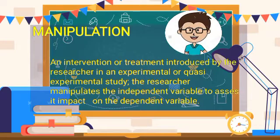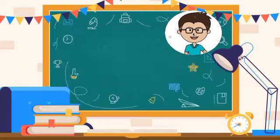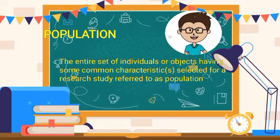Manipulation is an intervention or treatment introduced by the researcher in an experimental or quasi-experimental study. The researcher manipulates the independent variable to assess its impact on the dependent variable. Population refers to the entire set of individuals or objects having some common characteristics selected for a research study.